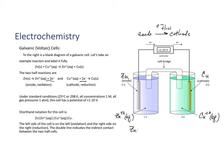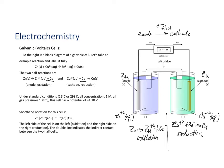In this half reaction, zinc gives up two electrons to become zinc²⁺ — that's oxidation, always on the left. On the right side, copper²⁺ gains two electrons to become copper metal — that's a reduction. Under standard conditions — 25°C, 298 Kelvin, all concentrations one molar, all gas pressures one atmosphere — this cell has a standard potential of positive 1.1 volts.